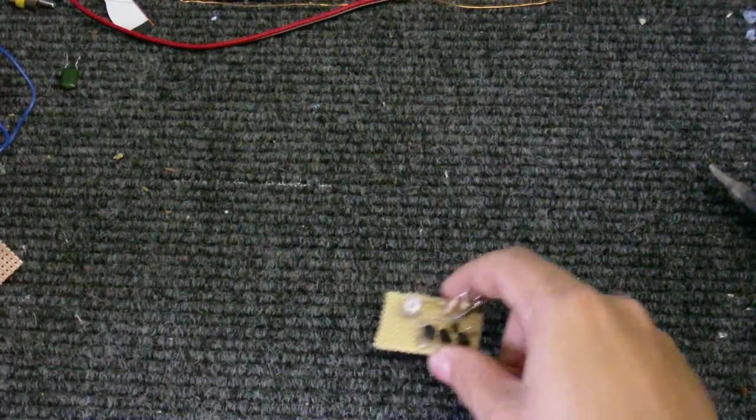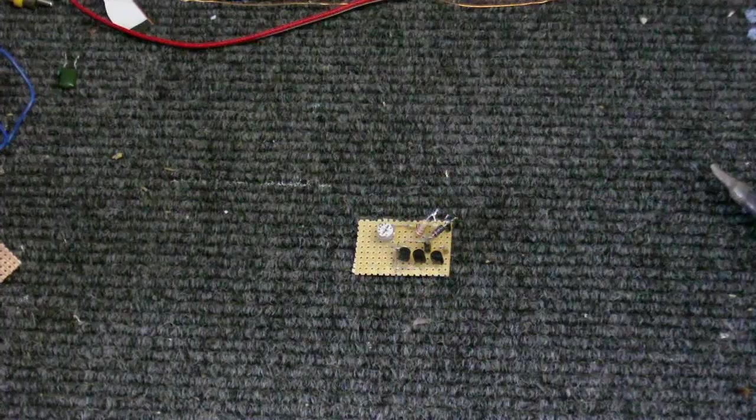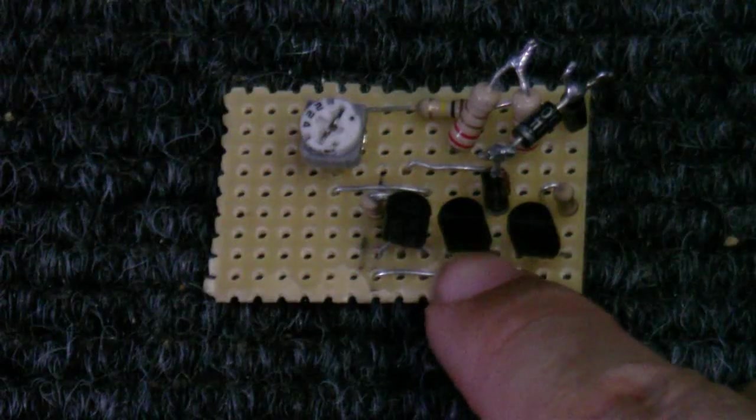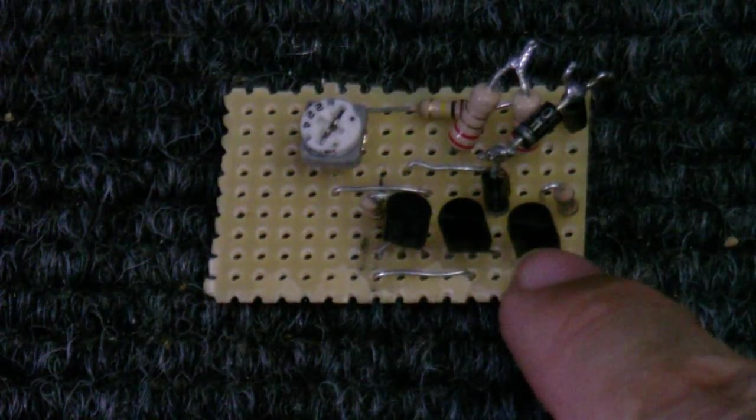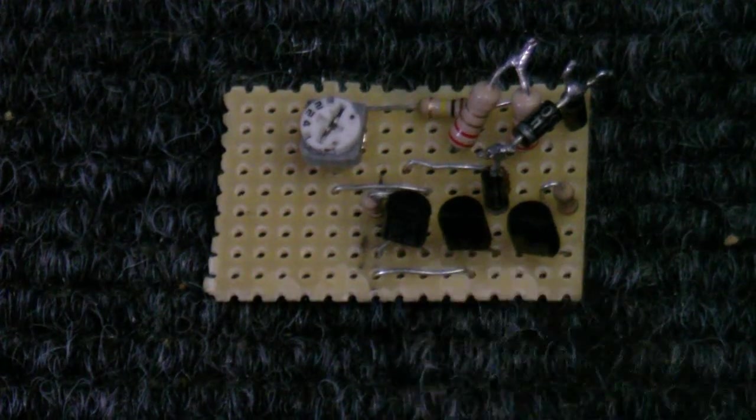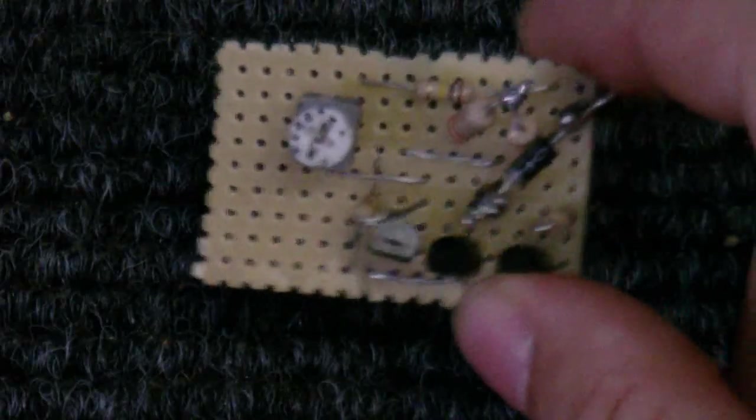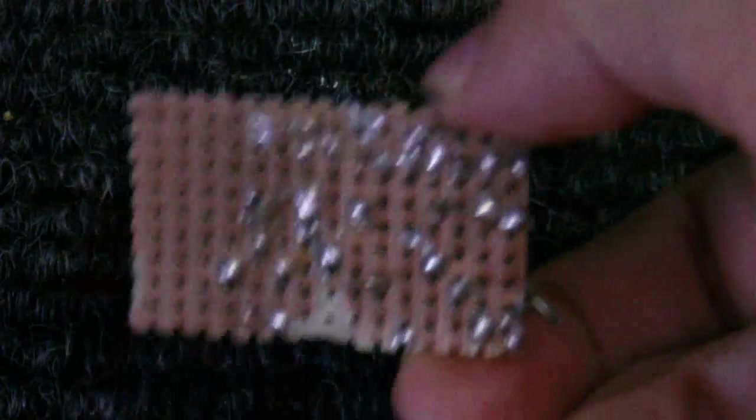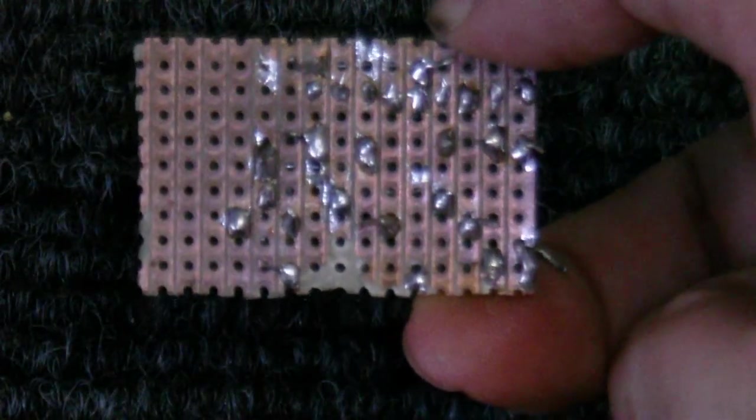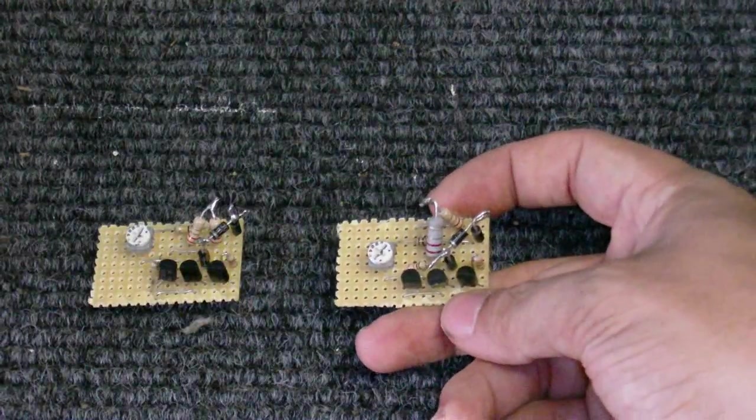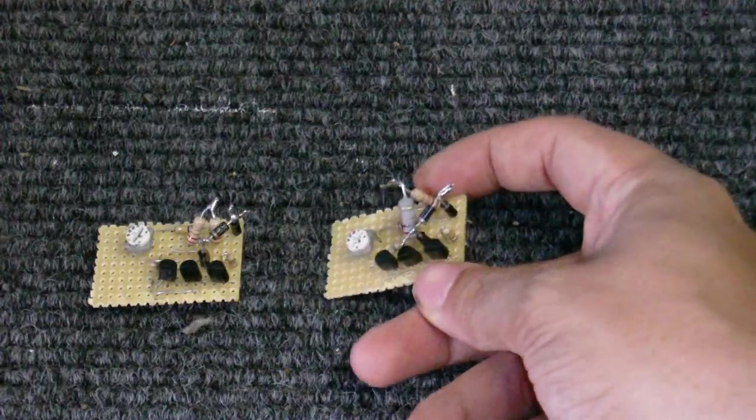Do you remember that amplifier prototype I made a couple of weeks ago? Well, now I've put it into a little piece of stripboard. Let's just get a close-up. You can see the three transistors: the NPN and PNP output transistors and the driver transistor, and all the other parts that are needed. There's my meaty soldering. I made that and another one for stereo.